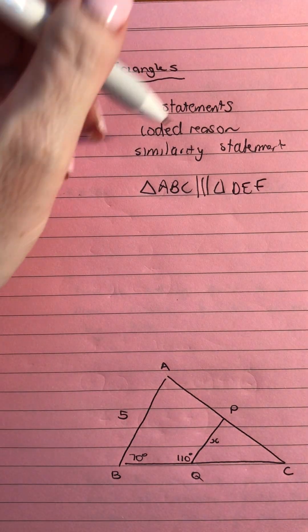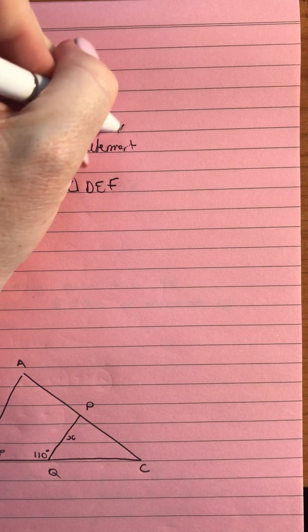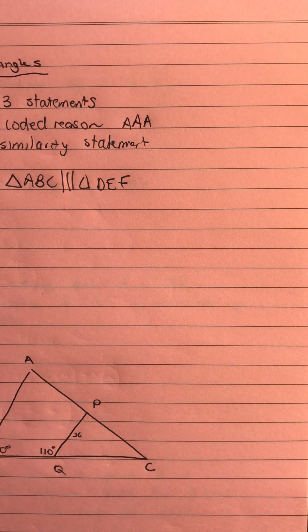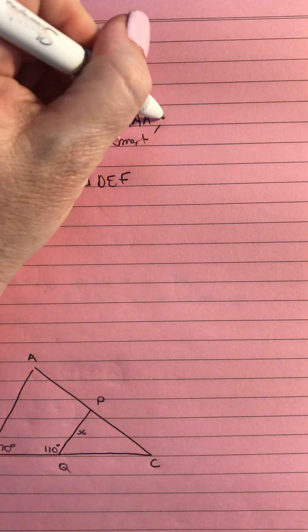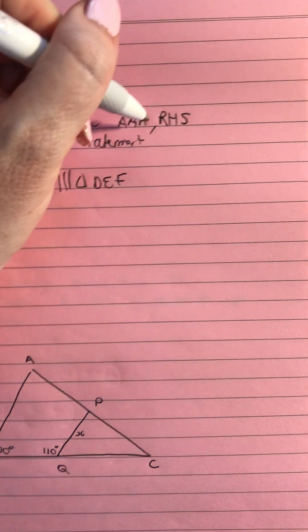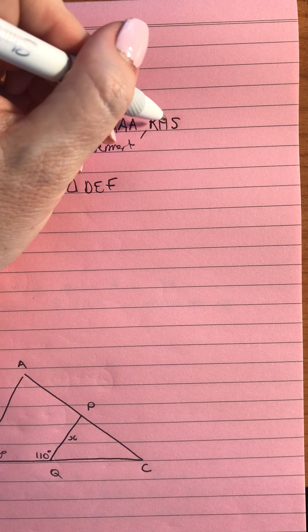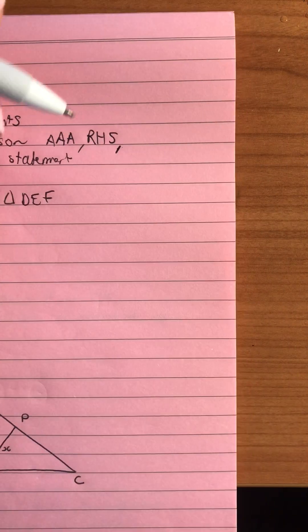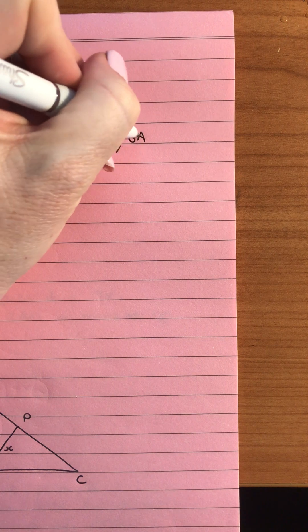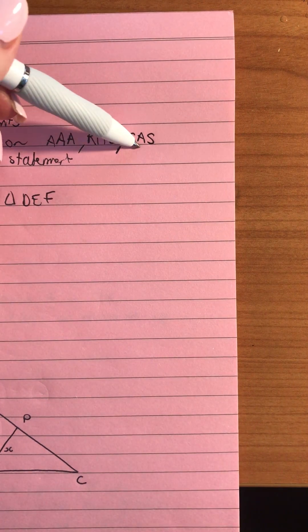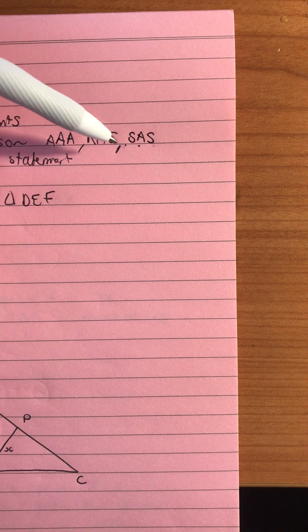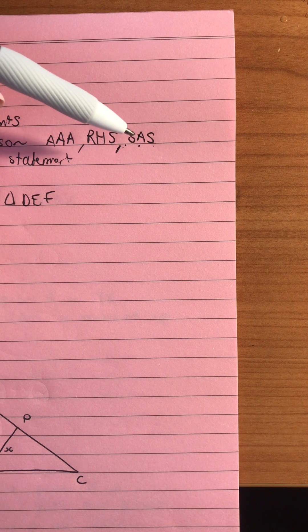So your similarity statement is going to look like triangle ABC is similar to triangle DEF depending what your triangle is. Your coded reasons can be angle angle angle, remembering as soon as we find out two of the angles are the same we know the third will be. We have RHS which is where we've got a right angle in both triangles and the hypotenuse and a side have the same scale factor. We've got SAS which is where we have an angle that we know that is the same in both triangles and then we've got two other sides where we can check the scale factor and it's the same scale factor.